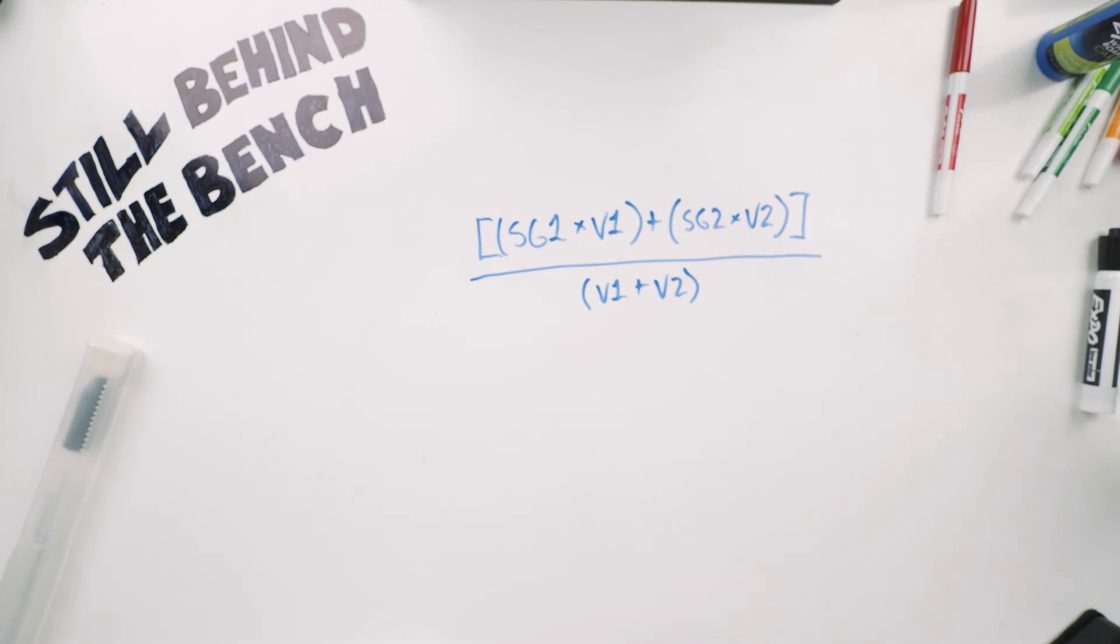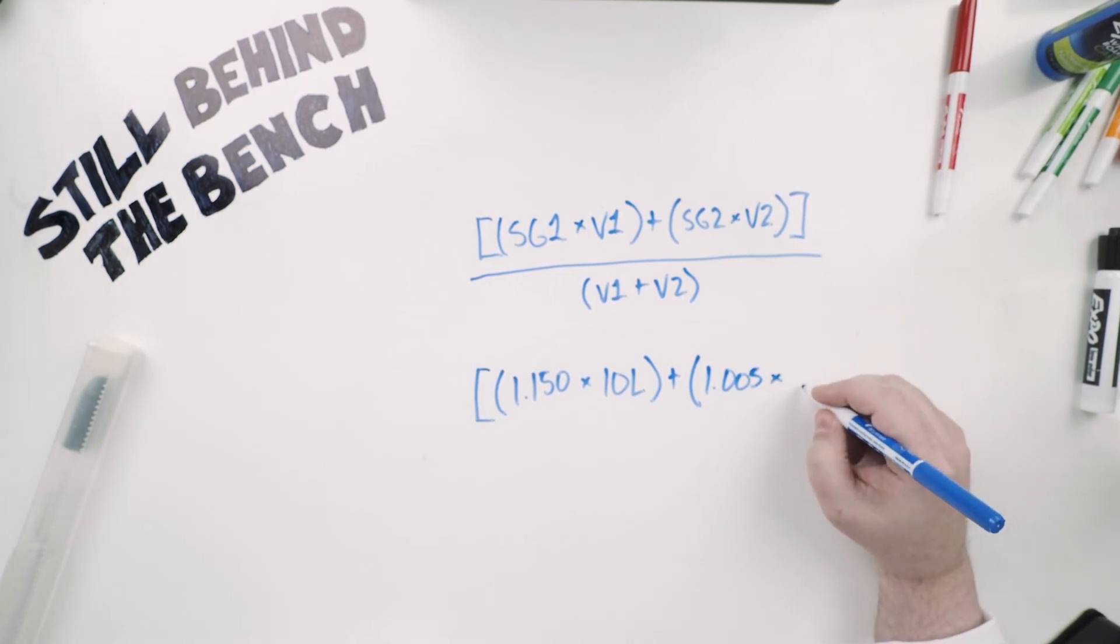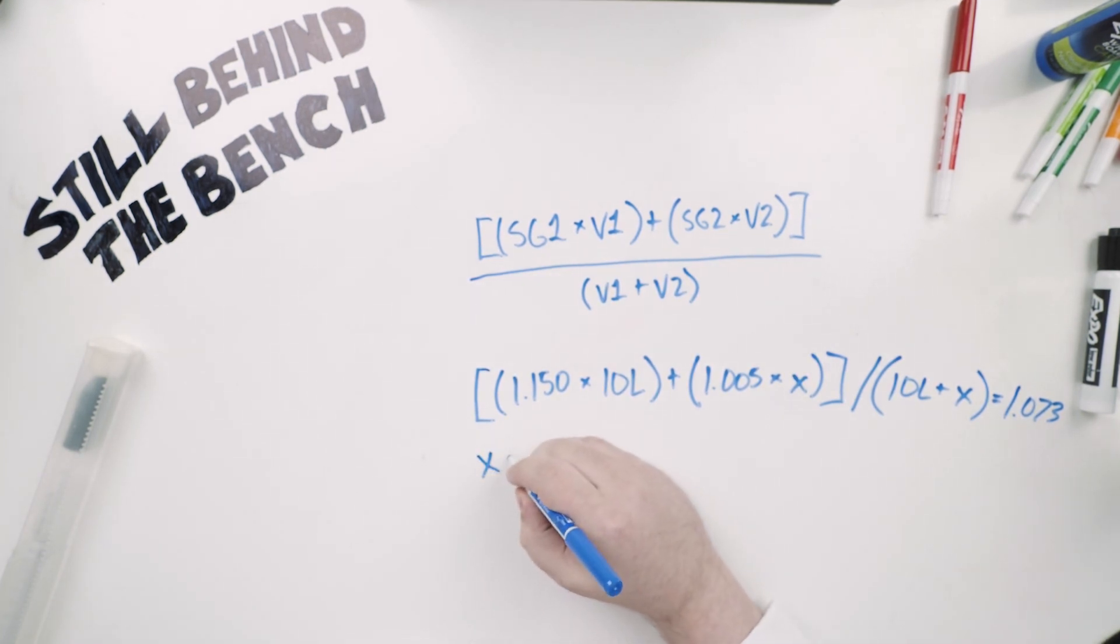Let's say you have a wash that is at 1.150, you have 10 liters of it and you want to dilute it down. You have your tap water but you don't know how much to add and you want to get down to a specific gravity of 1.073. So this is essentially how you would type it into Wolfram Alpha and it would come back with an answer. Sometimes it'll just give you an approximate answer. In this case it says x equals 11.354 liters.